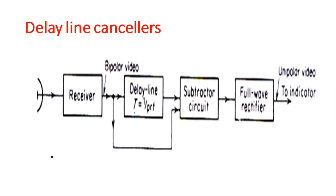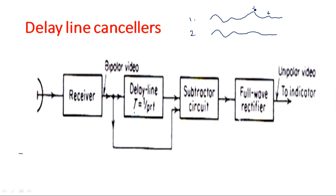Now let us see the block diagram used to convert the bipolar video pattern into a unipolar video pattern. We take two successive received signals. Consider the received signal for the first pulse and the signal for the second pulse. We have a small peak for one target and a bigger peak for another target — target one and target two — along with the second cycle output. When these two are given to a subtractor, components with constant amplitude are eliminated and those with variable amplitude remain.